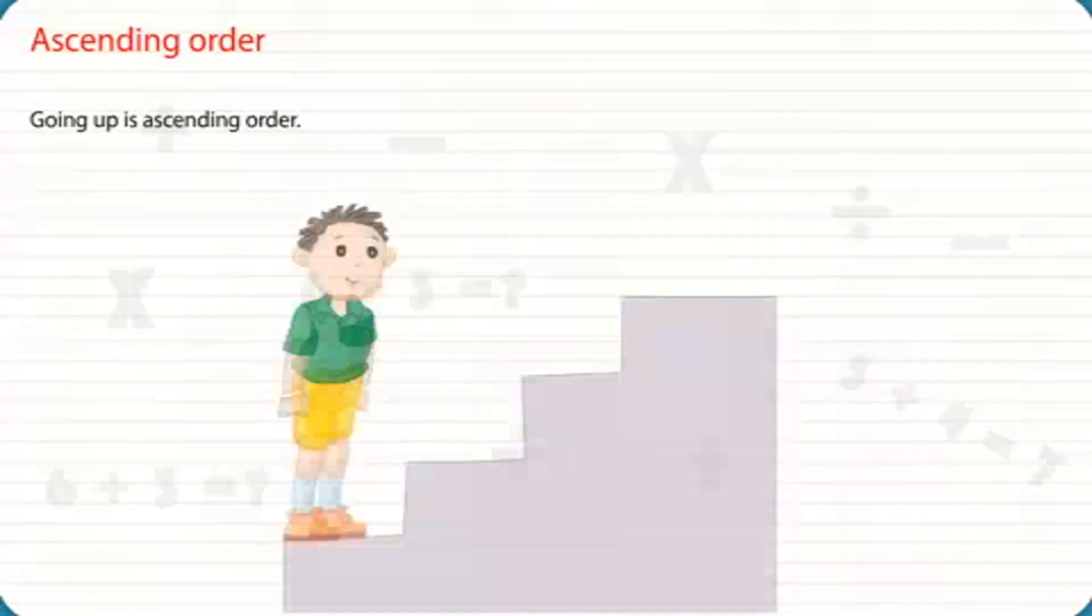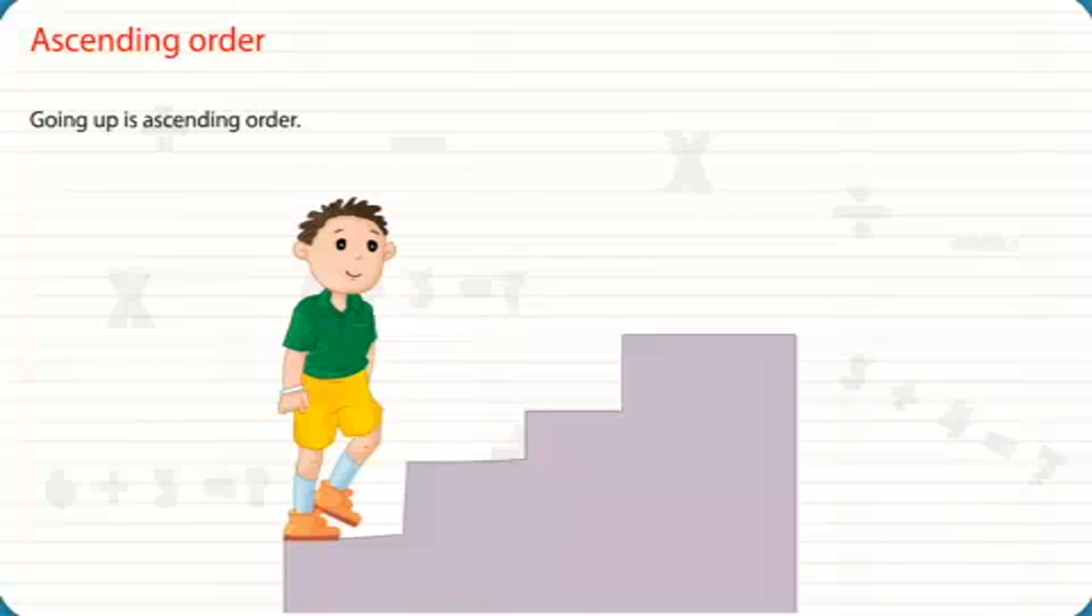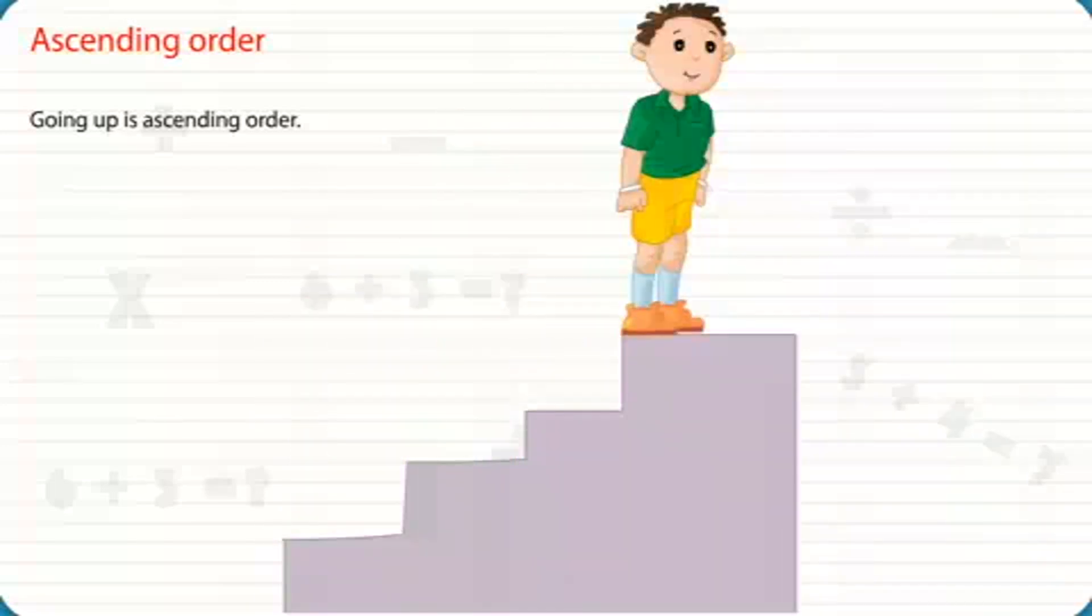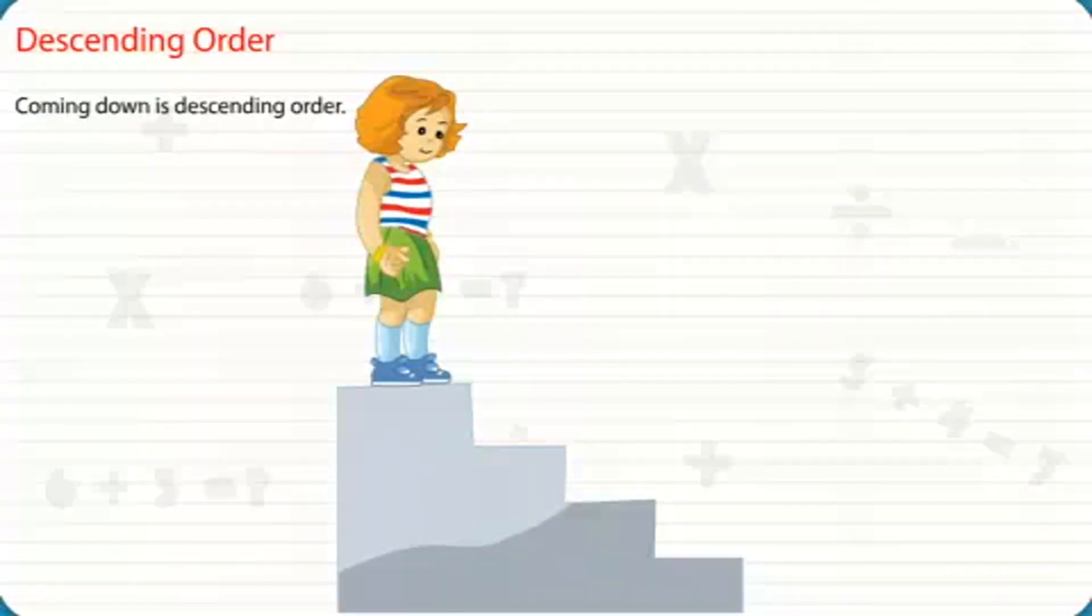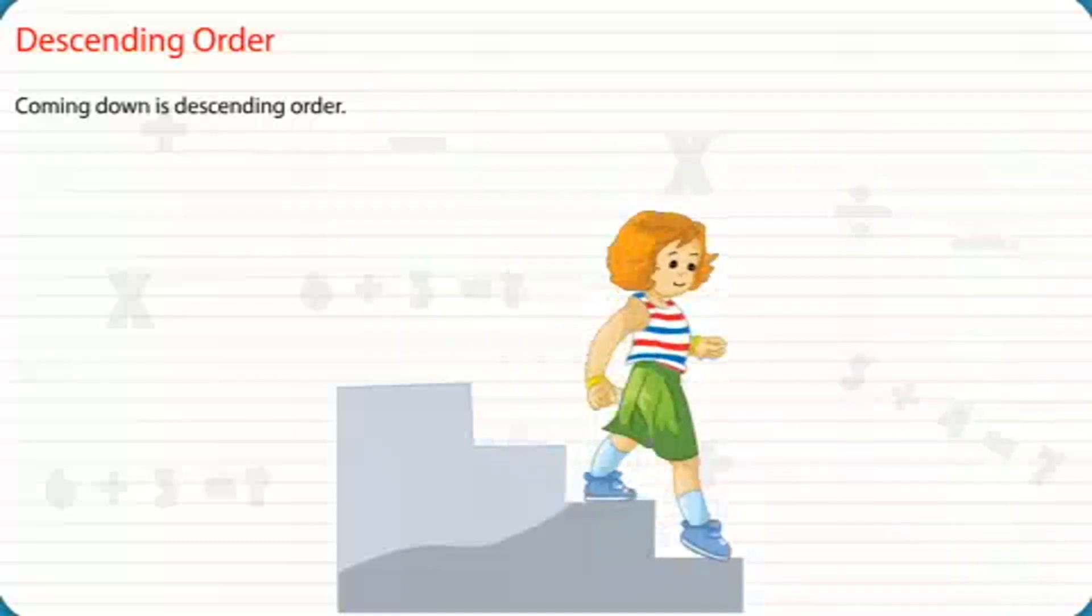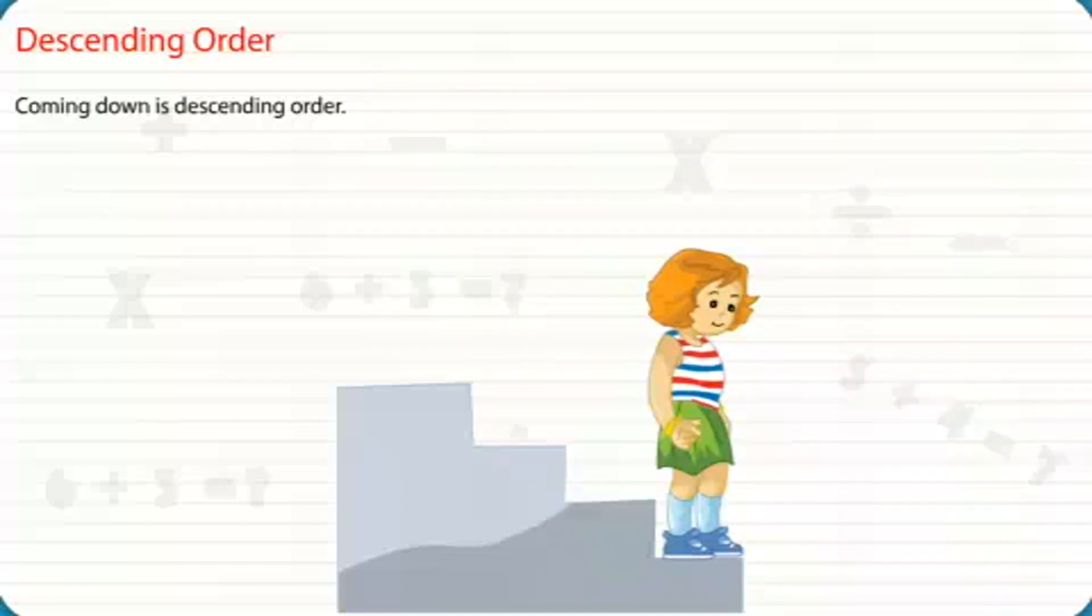Ordering of Numbers. Ascending Order: Going up is ascending order. Descending Order: Coming down is descending order.